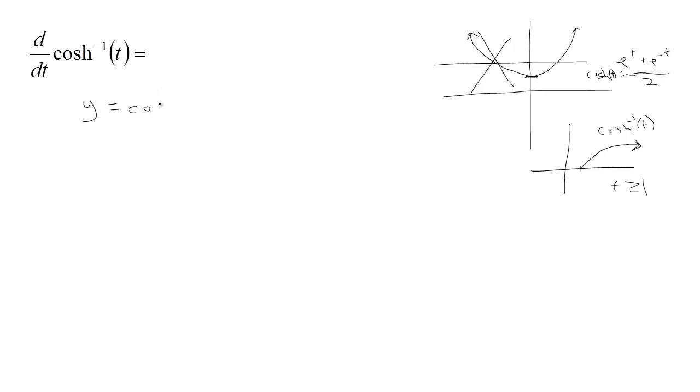If we'll use our same trick, y is the cosh inverse of t, so the cosh of y is t. And you take the derivative, the derivative of cosh is the sinh. So, the derivative of the outside y with the inside times the derivative of the inside. The derivative of t with respect to t is 1, so dy/dt equals 1 over hyperbolic sinh of y.